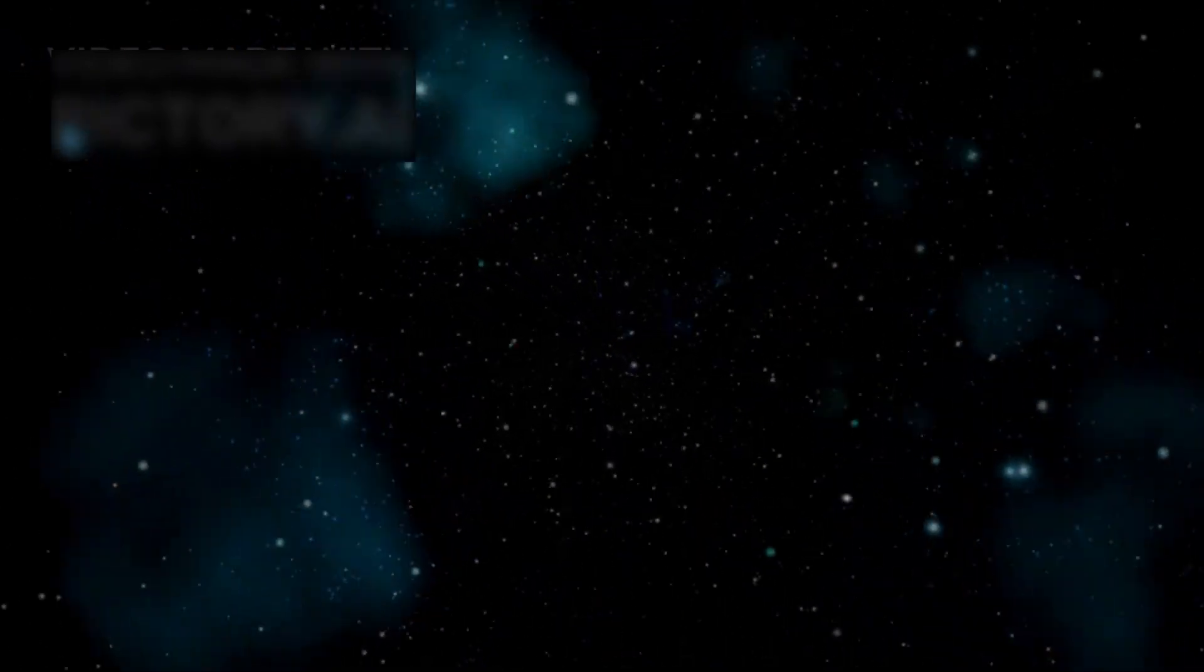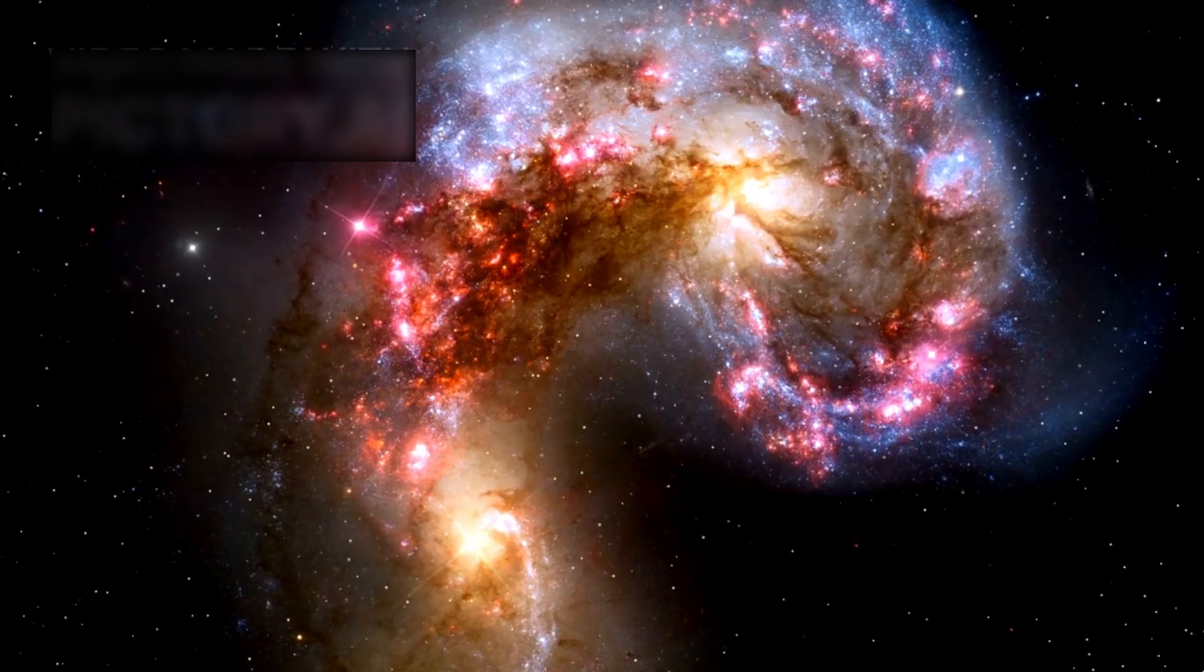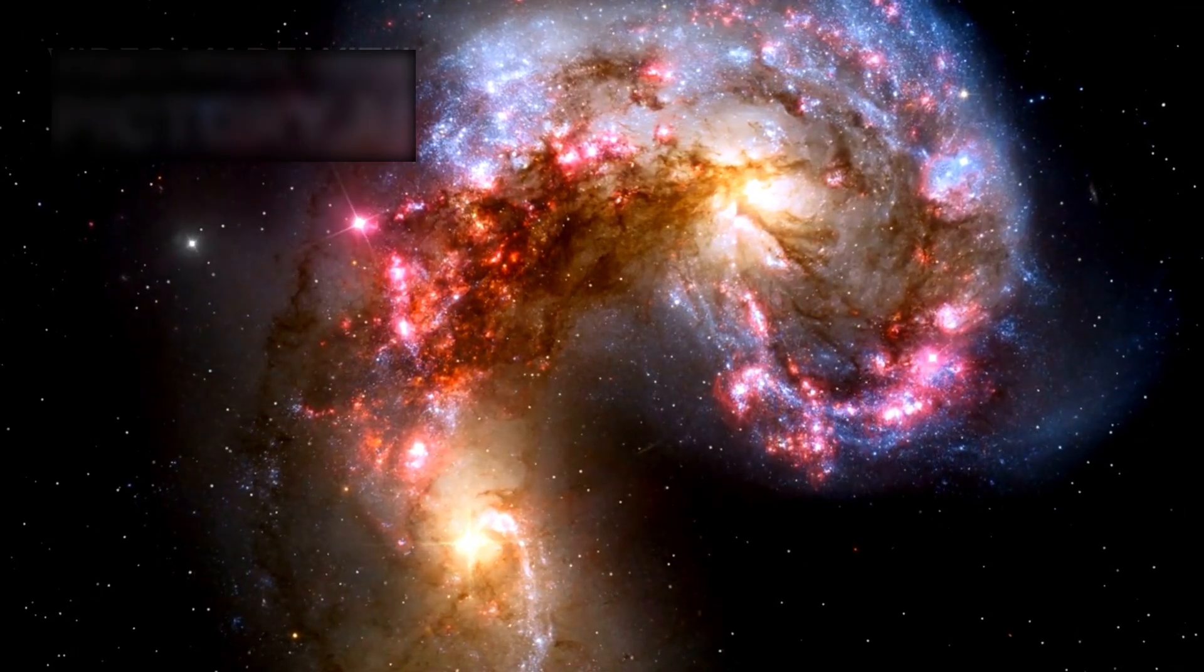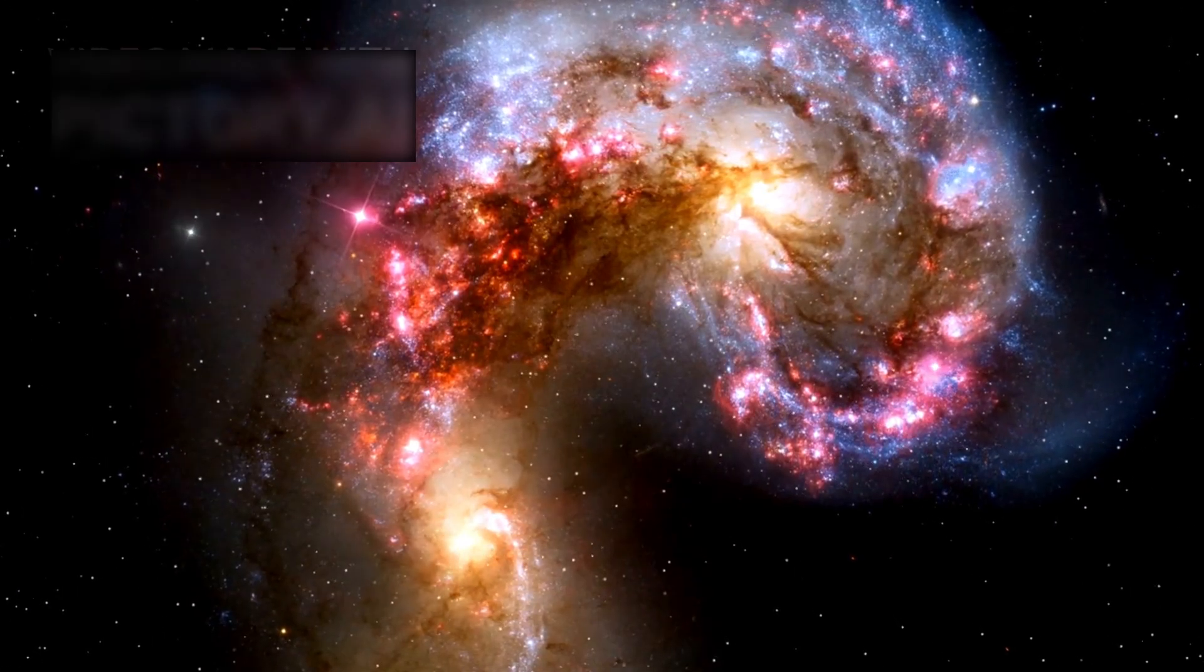Among Webb's most visually captivating feats is its imaging of Stephan's Quintet, a cluster of five galaxies located about 290 million light-years away in the Pegasus constellation. Four of the galaxies are engaged in a mesmerizing gravitational interaction, spiraling and colliding in a cosmic dance that creates bursts of star formation.